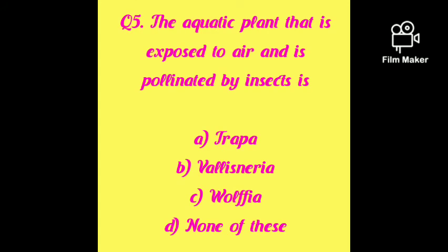The aquatic plant that is exposed to air and is pollinated by insects is: trapa, vallisneria, wolffia, or none of these? All three are aquatic plants, but exposure to air and pollination by insects occurs in the case of trapa, also known as singhara. That's all for this video, students. Thank you, have a nice day and study well for your examinations.